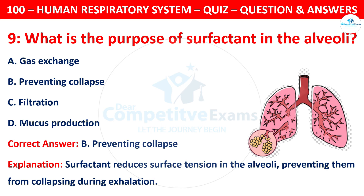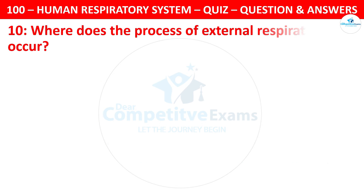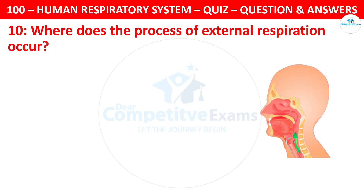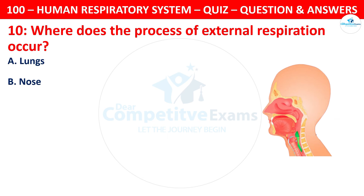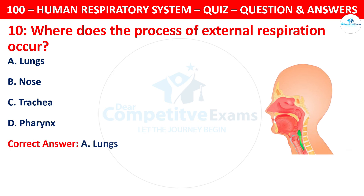Question 10. Where does the process of external respiration occur? Your options are: lungs, nose, trachea, or pharynx. The correct answer is A, lungs.